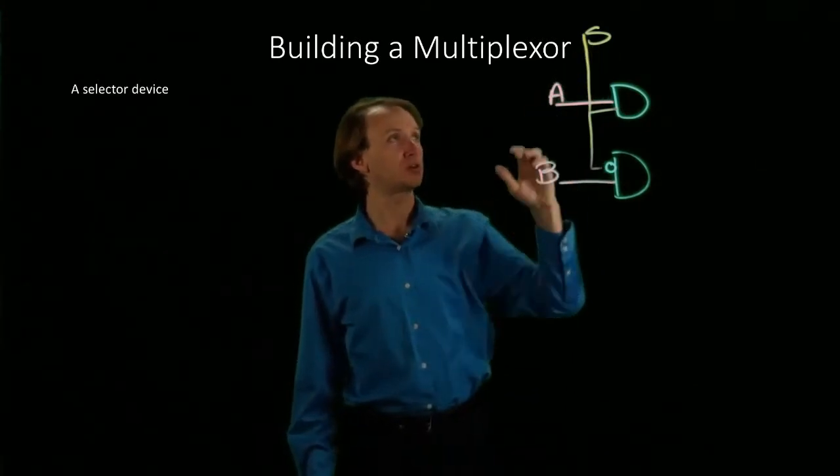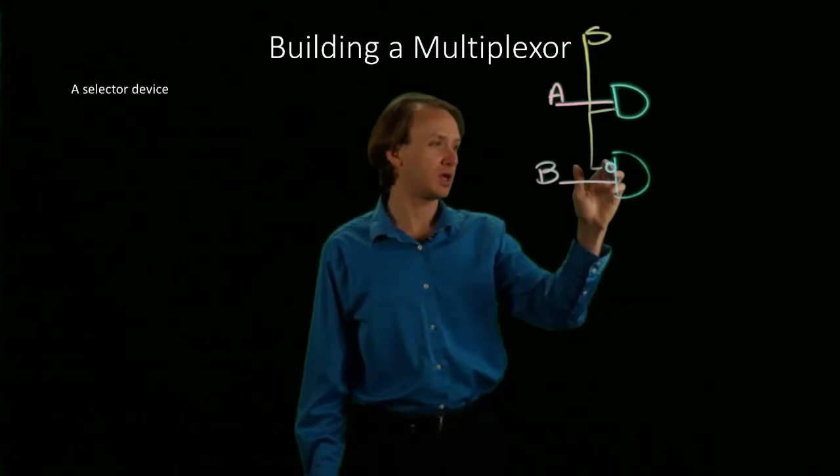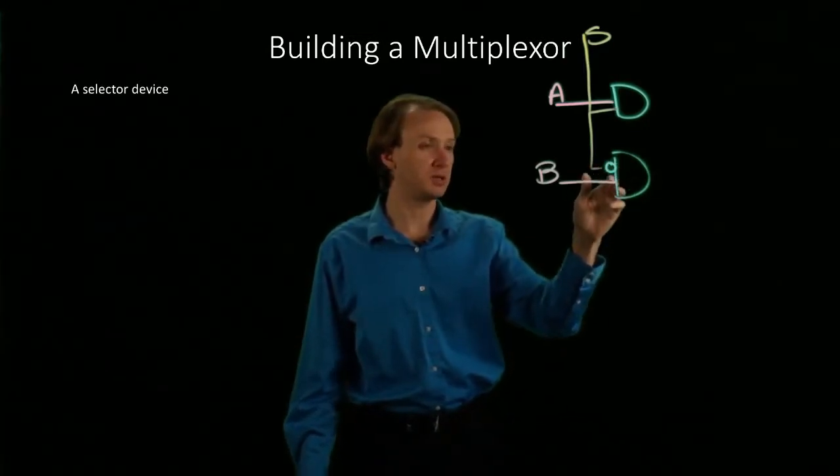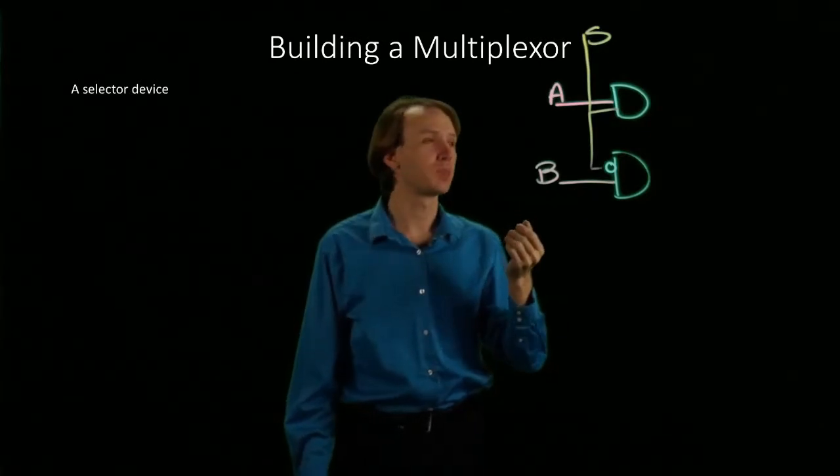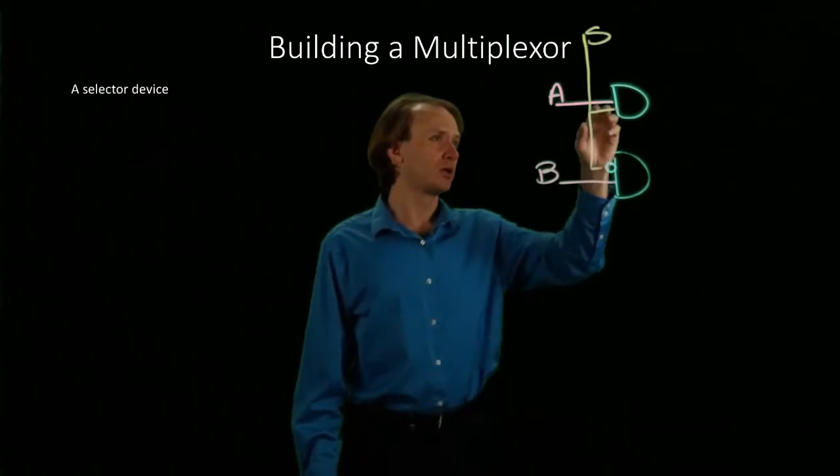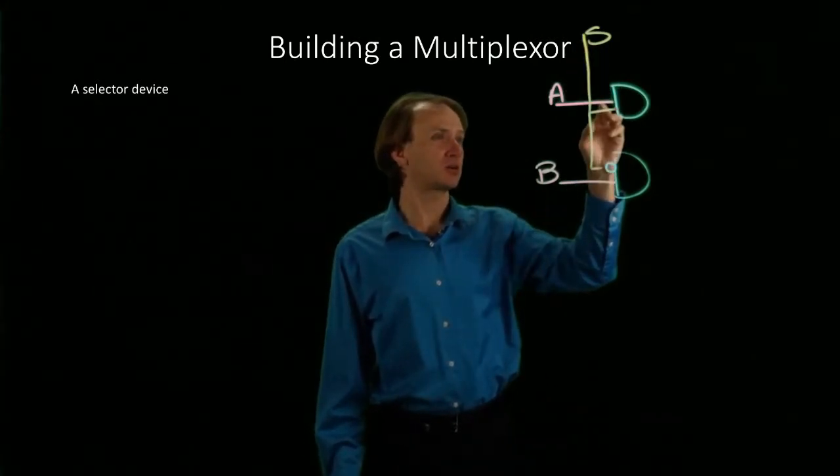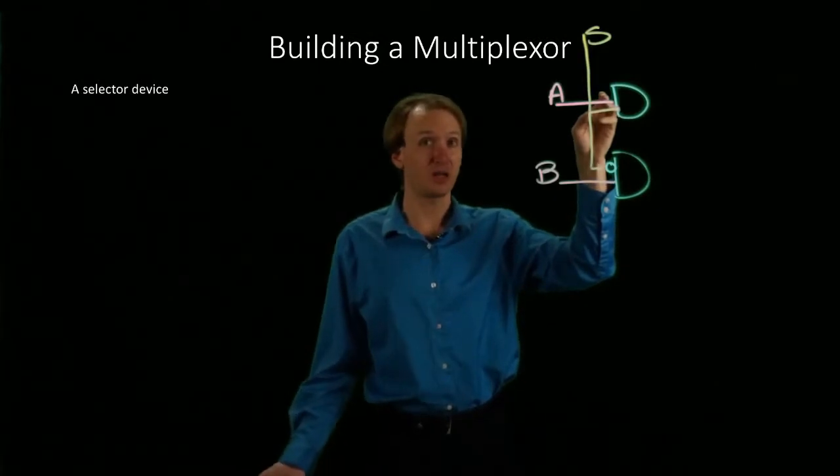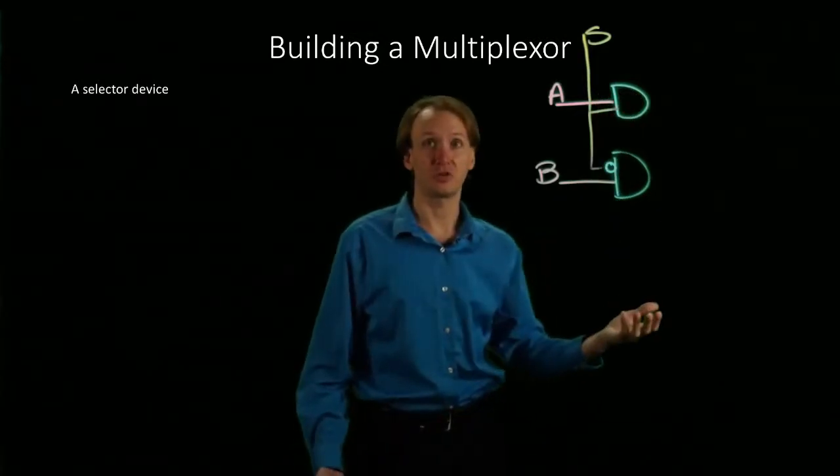Conversely, if we set our selector bit to 0, then after this NOT gate, we'll have a 1. So 1 and B is whatever B is. So now we'd be able to select whatever is on this B line. But since our selector bit is 0, 0 and regardless of what A is, this AND gate is always going to produce 0.